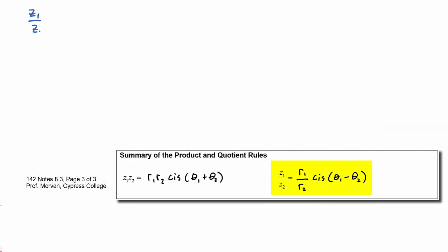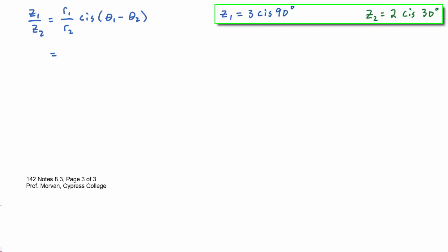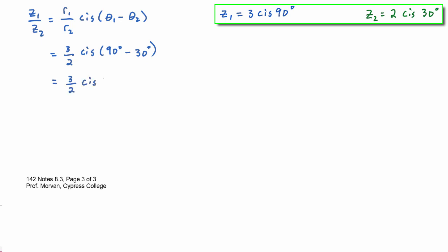For the quotient, z1 over z2 is equal to r1 divided by r2, cis (theta one minus theta two). That's going to equal three divided by two, cis (90 degrees minus 30 degrees), which equals three-halves cis 60 degrees. That's the trig form of our answer.